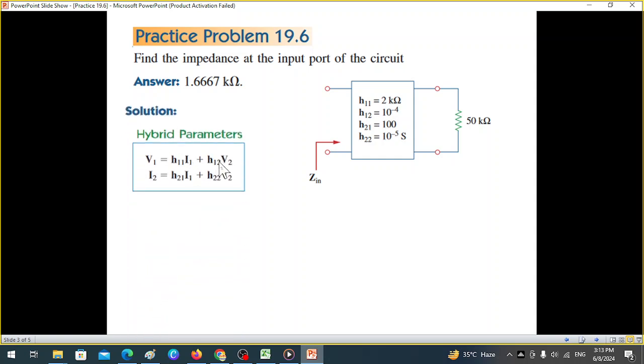The first thing we write down the hybrid parameter equations and then we mark the currents and the voltages. You can see in all the hybrid parameter circuits, currents always enter the circuit. So I1 is entering and I2 is entering. This is the input voltage, we call it V1, and the output voltage is called V2.